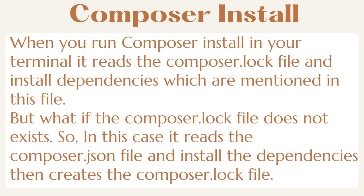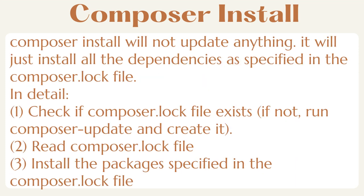When you run Composer Install in your terminal, it reads the composer.lock file and installs dependencies which are mentioned in this file. But what if the composer.lock file does not exist? In this case, it reads the composer.json file and installs the dependencies, then creates the composer.lock file. Composer Install will not update anything — it will just install all the dependencies as specified in the composer.lock file.